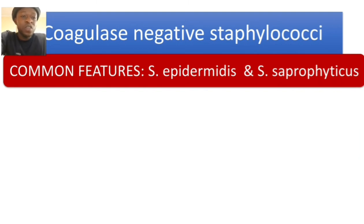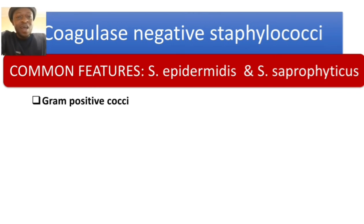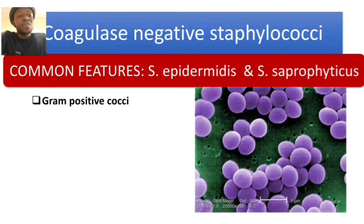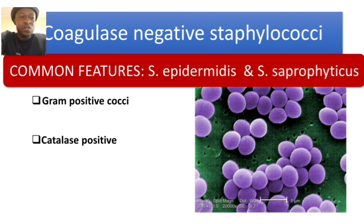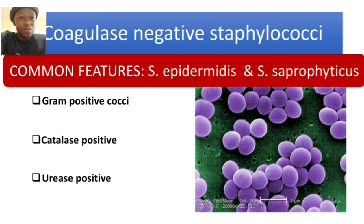Now for the common features of both Staphylococcus epidermidis and Staphylococcus saprophyticus: these are gram-positive cocci — they look like clusters of grapes, slightly different from Staph aureus whose colonies appeared as golden grapes, while these just show standard gram-positive staining. Additionally, both bacteria are catalase positive. An additional feature is that they are urease positive, though urease is mainly important when discussing organisms like Proteus and H. pylori, which we will cover later.